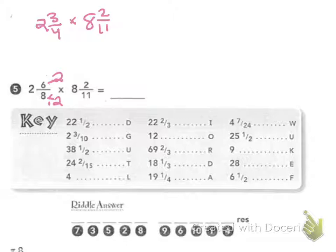But I want to make sure that I turn my mixed numbers into improper fractions. I'm going to say 4 times 2, which is 8, plus 3, which is 11. So I have 11 over 4, times...